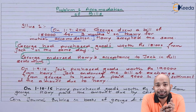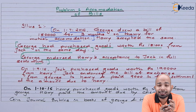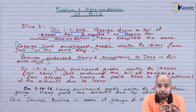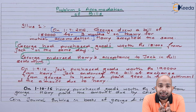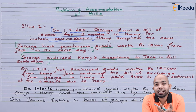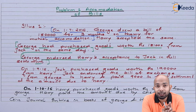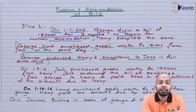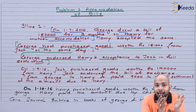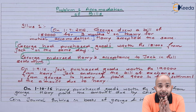On the same day, 1st of July 2016, George purchased certain goods from Jack for 1 lakh 81,000. Instead of paying cash, George endorsed the acceptance he received from Harry — worth 1 lakh 80,000 for three months — to Jack in full settlement. This is the second phase.